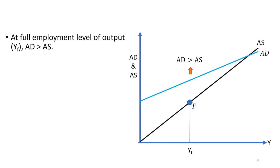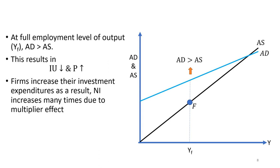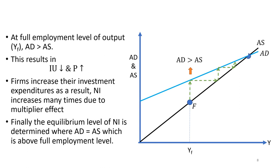Therefore, unplanned inventory investments decrease and there is upward pressure on prices. This results in more profits for firms, and as a result, firms increase their investment expenditures, increasing national income many times due to the multiplier effect. Finally, the equilibrium level of national income is determined where aggregate demand equals aggregate supply, which is above the full employment level. The level of output above full employment is monetary or nominal; the gap between the output level at full employment and the output level at equilibrium above full employment represents the inflationary gap.